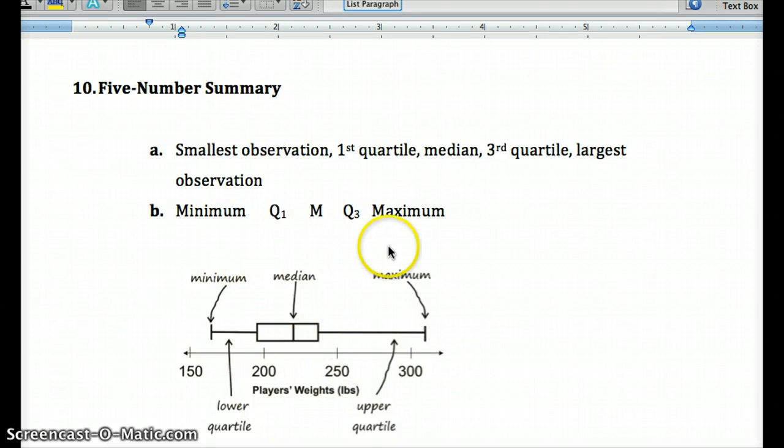We can represent this with what we call a box plot, meaning we'd have the minimum here, we'd have quartile 1 here in the box, quartile 3 here, and the median here. So we have our minimum, we have Q1 right here, we have the median, Q3, and the maximum.